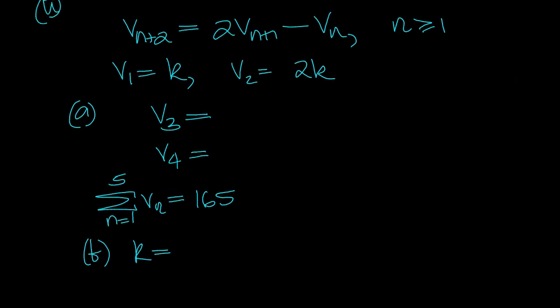So as for v3 and v4, well v3 when n is 1, is 2v when n is 1, so this is v2, so it's 2 times 2k minus when n is 1, v1 is k, that's 3k.